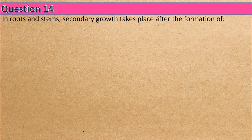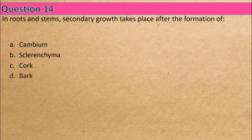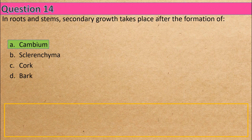Question 14: In roots and stems, secondary growth takes place after the formation of — Option A: cambium, Option B: sclerenchyma, Option C: cork, Option D: bark. The correct answer is Option A: cambium.